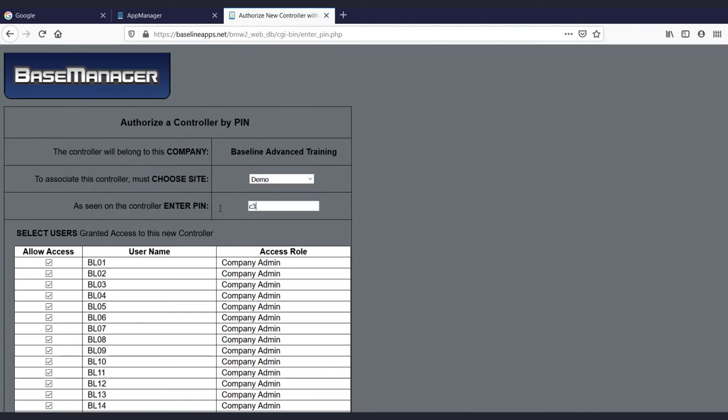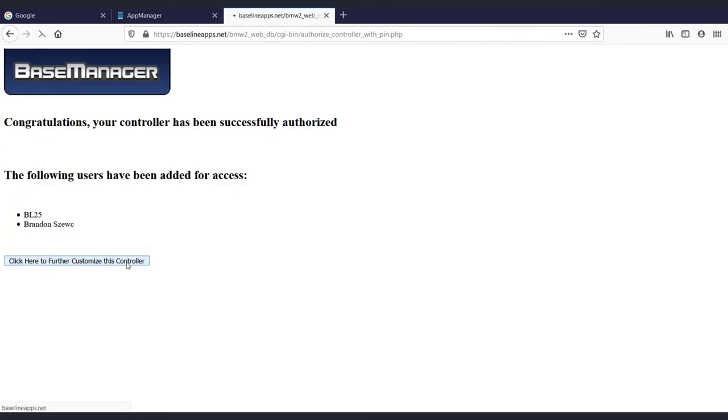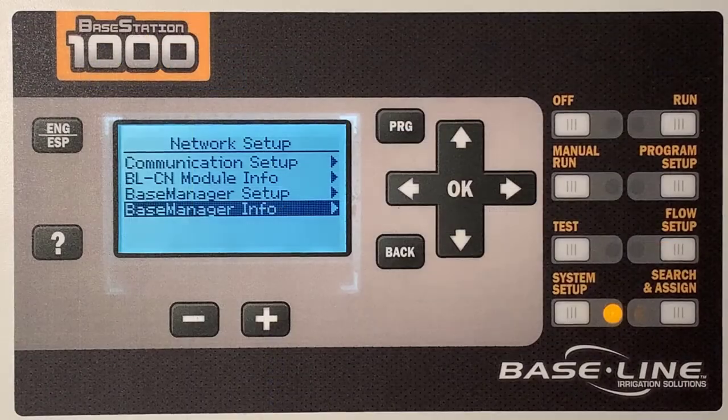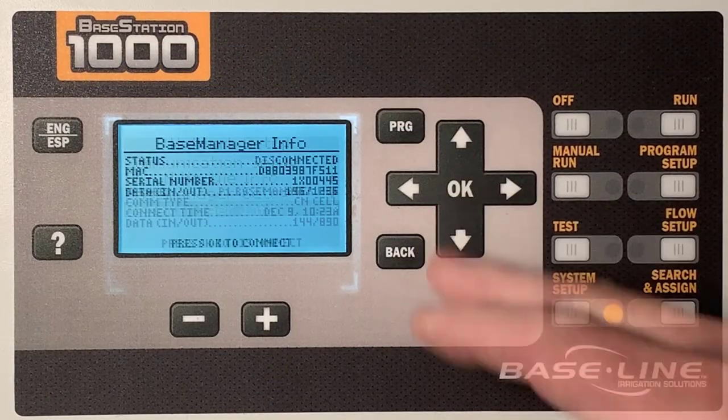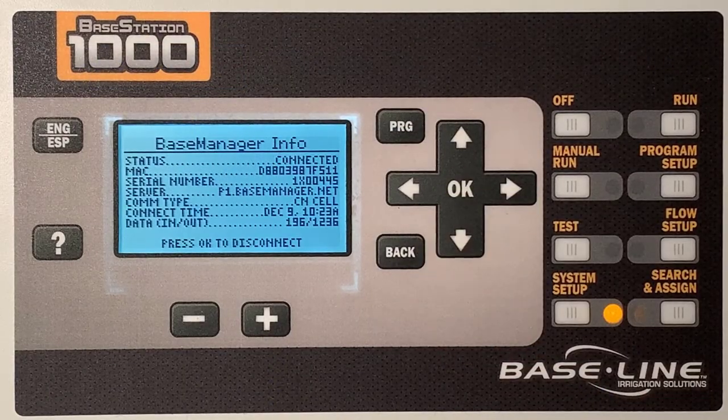Select the site, enter the pin, and add the additional site data to complete the link. Back at the controller, you can verify the connection at Base Manager Info and look for the connected status.